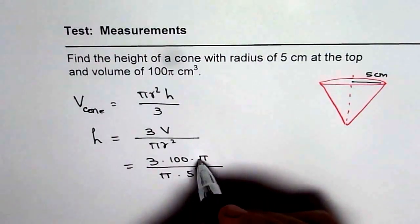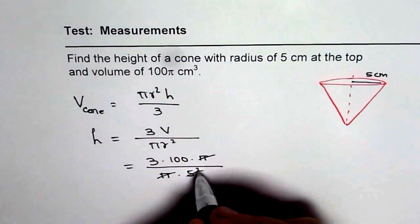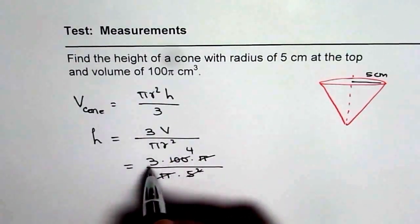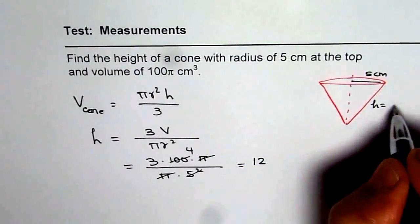Now π and π cancel out. That is the whole idea. And 5² is 25 which will go 4 times. So 4 times 3 is 12 and so we get height h equals 12.